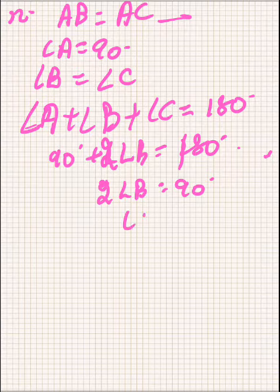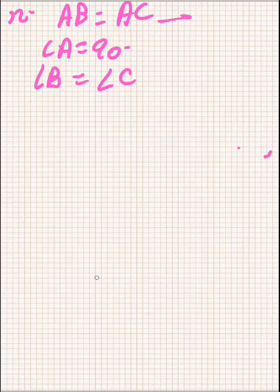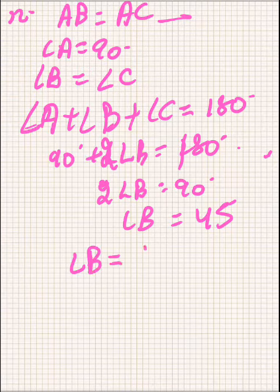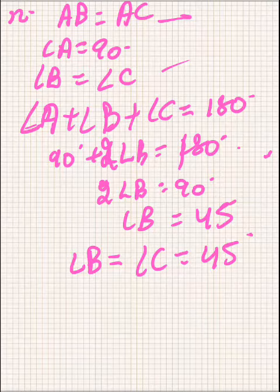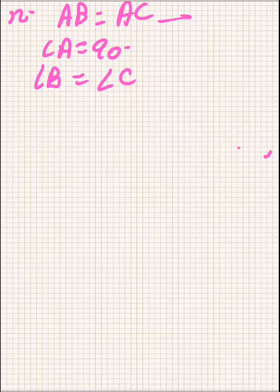So 2 times angle B will be equal to 90 degrees, and angle B will be equal to 45 degrees. We have proved that these are equal, and then these two will be equal. That's what we had to do in question number 12.